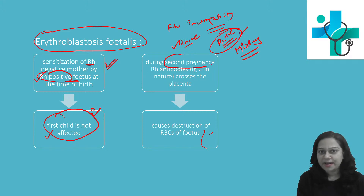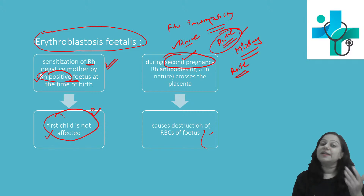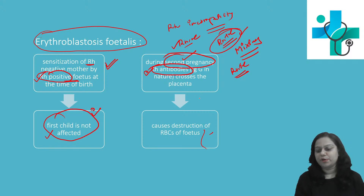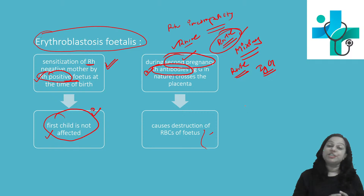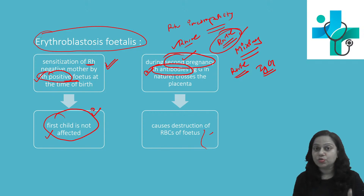Now during the second pregnancy, if she again carries an RH positive intrauterine child, the mother is already sensitized. Because of that, RH antibodies are present in the circulation. Always remember: RH antibodies are IgG in nature — immunoglobulin G variety. They are capable of crossing the placenta and affecting the intrauterine child.